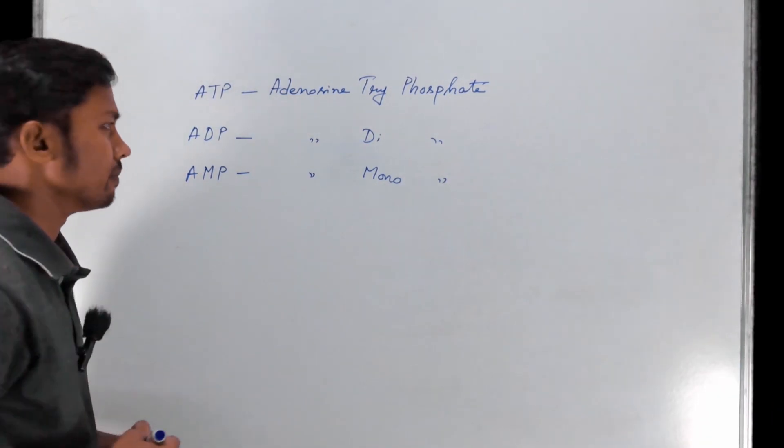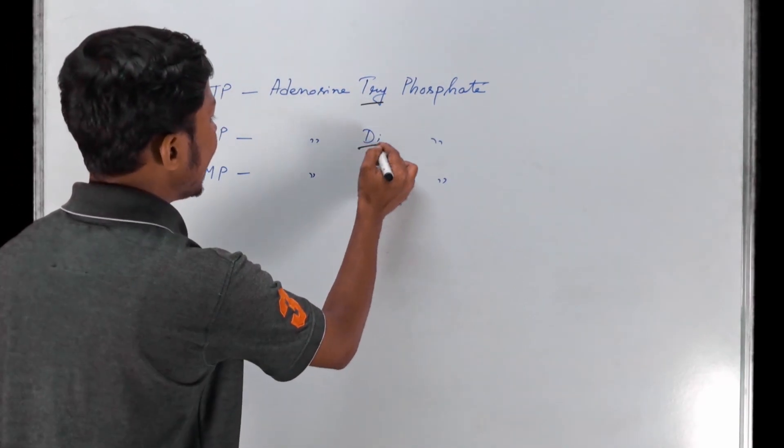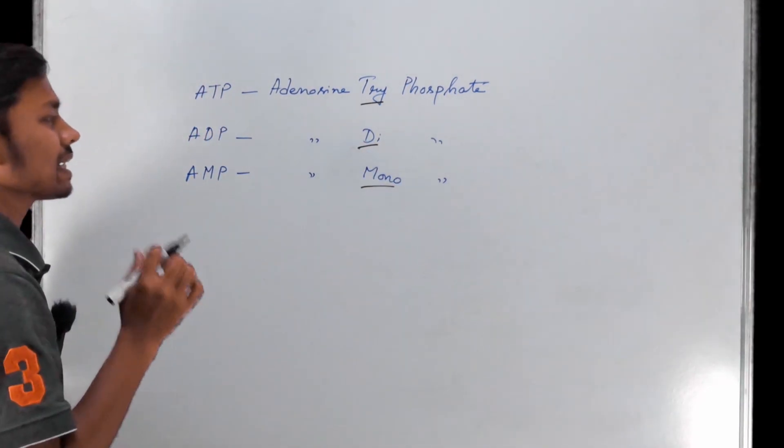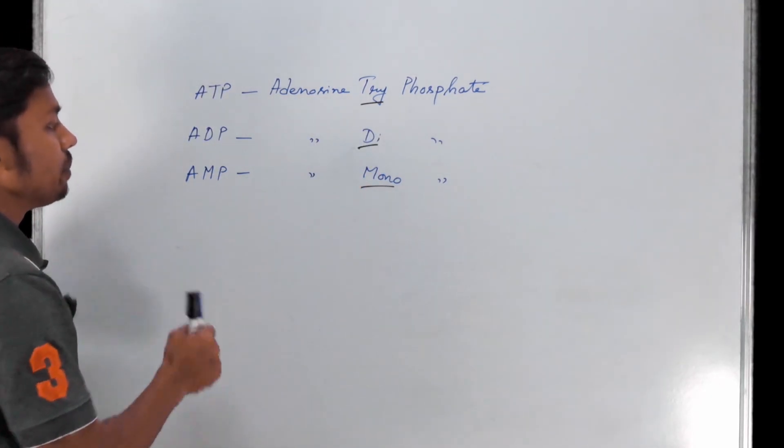Adenosine monophosphate. So you can see the prefixes here - tri, di, and mono. In biology, tri means three, di means two, and mono means one.